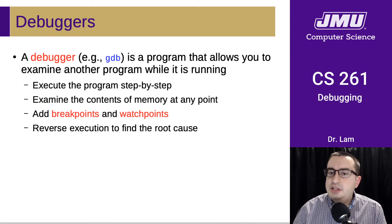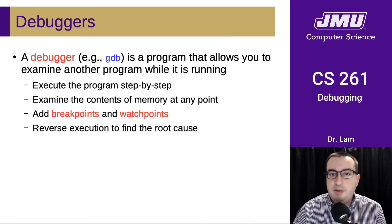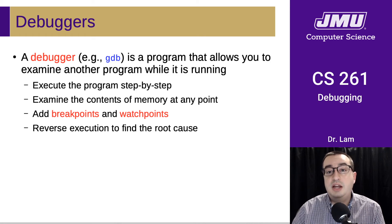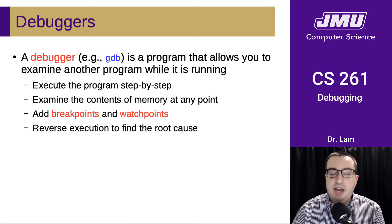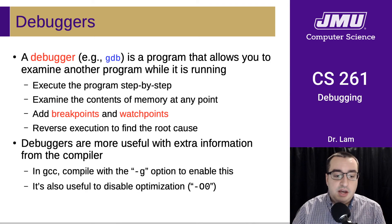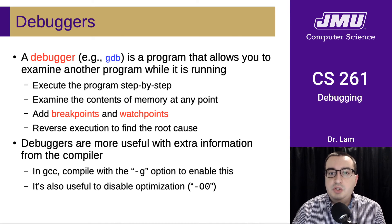A debugger is a program that allows you to examine another program while it's running. You can generally execute the program step by step, examine the contents of memory at any point, add breakpoints and watchpoints to stop at particular places or when a particular memory location changes. Some debuggers actually allow you to reverse execution so you can step backwards from where the symptom was to unravel the chain back to the root cause. Debuggers are more useful with extra debug information from the compiler — you'll need to compile with the -g option. It's also useful to disable optimization when debugging.